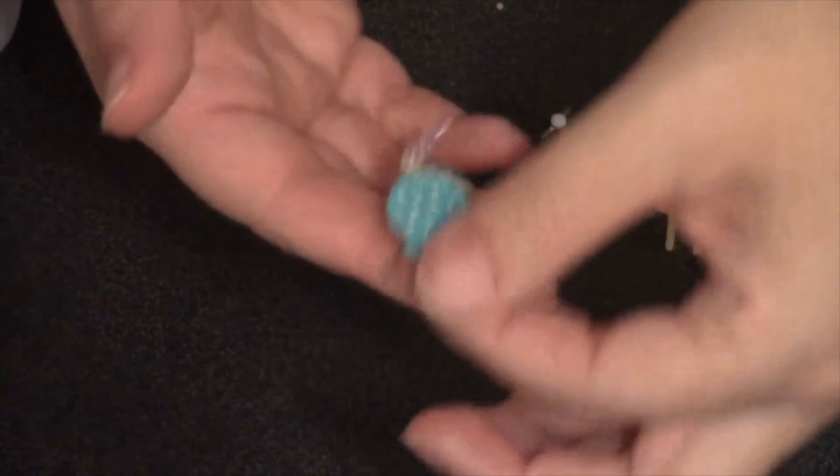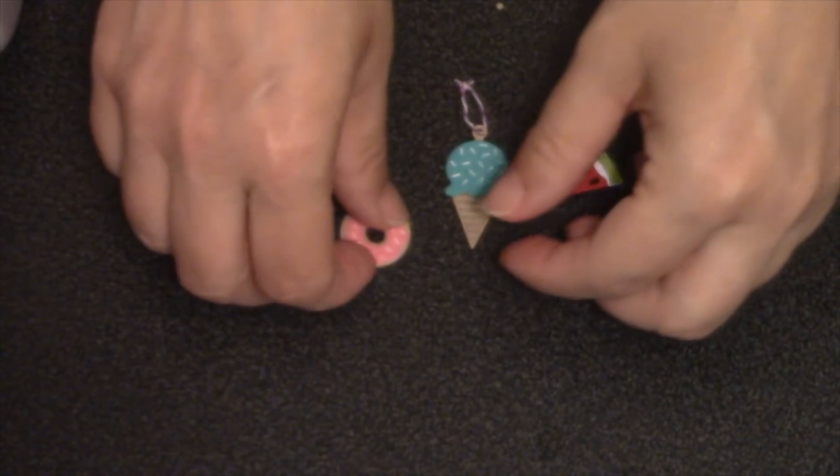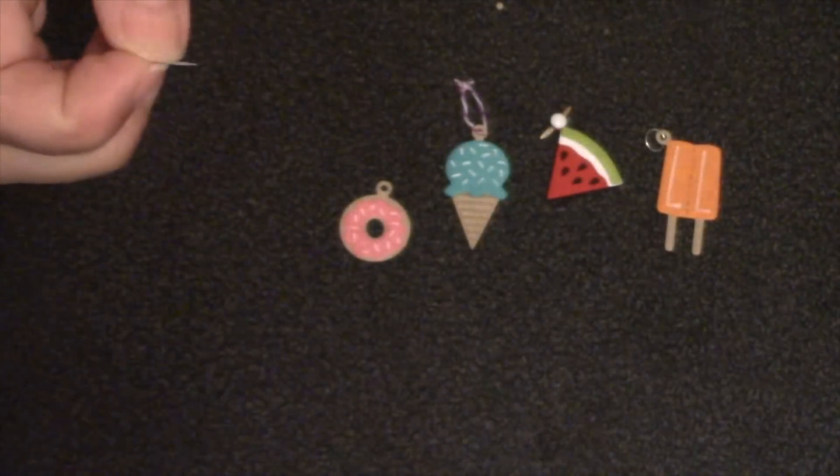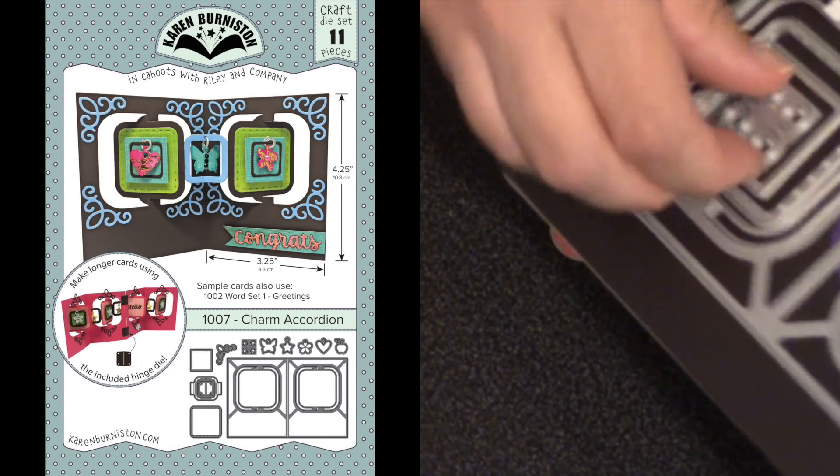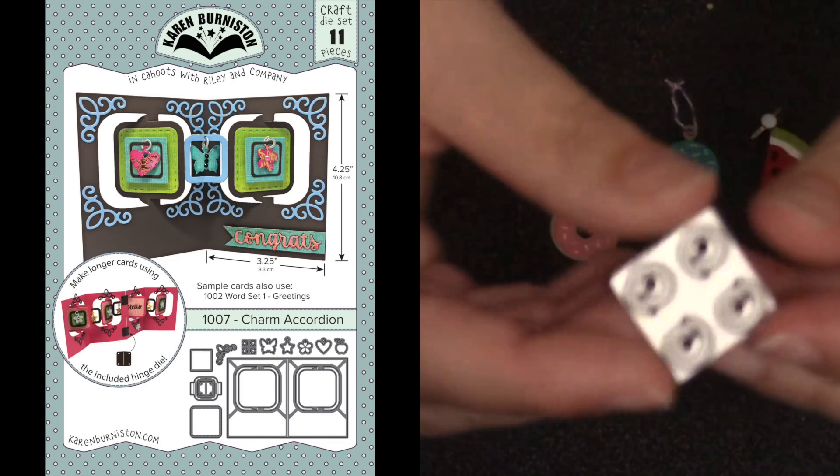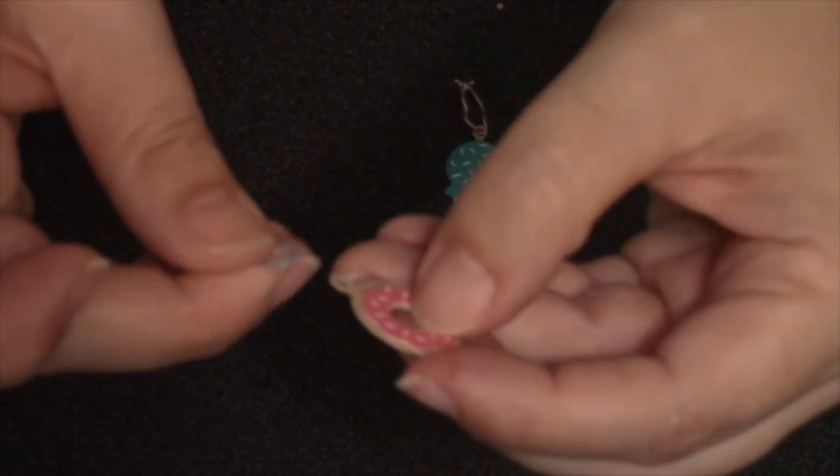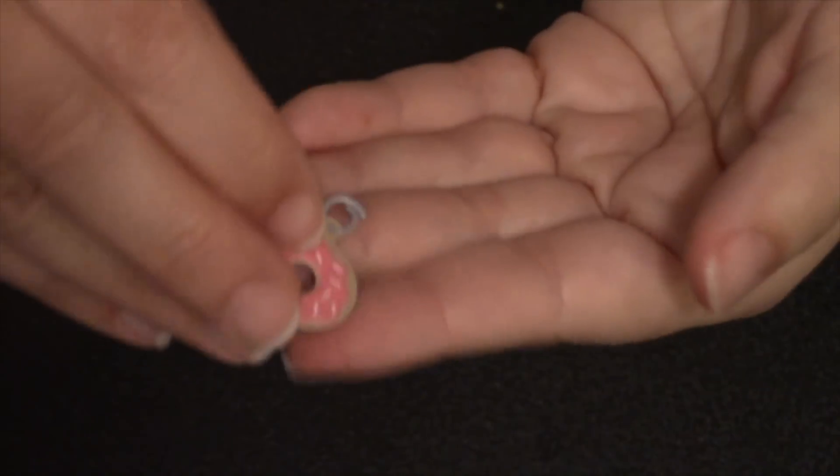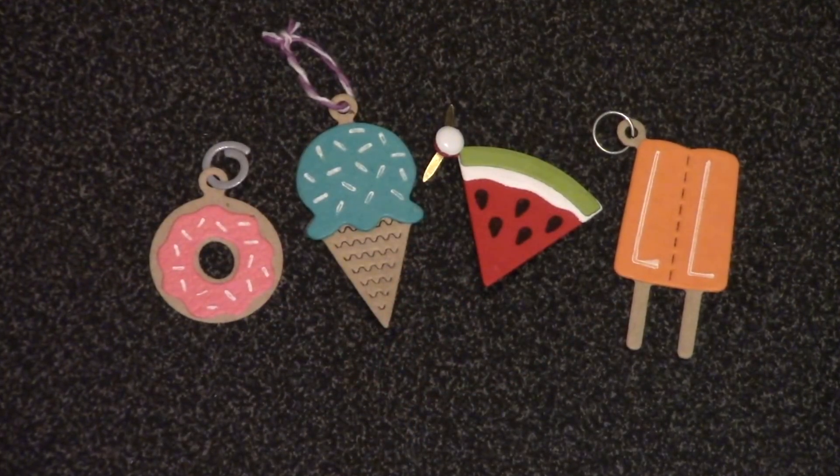Any type of twine or string or thread or fishing line—we do now sell some twine on our website just in convenient little two-yard packs. And another option would be the paper jump ring. Now that comes included in the Charm Accordion die set. There is a die in that set that will actually cut four paper jump rings at one time for all of your charm sets. So you cut that paper jump ring and then you can use that in place of a metal jump ring. What's nice about that is it really reduces the bulk and the weight inside your card because those paper jump rings lie very flat.